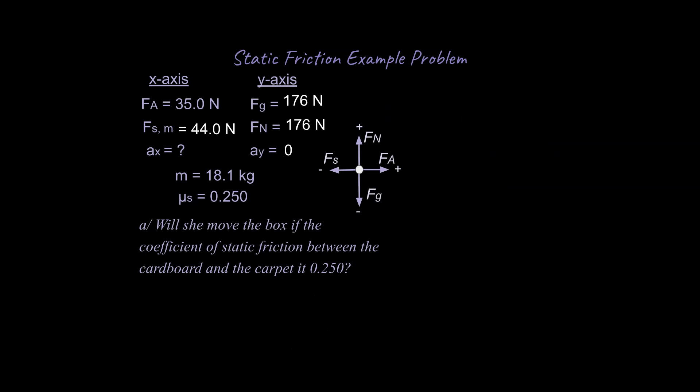So it says, will she move the box if the coefficient of static friction between the cardboard and the carpet is 0.250? So will she move this box? What do you think? Look at what we know and come up with an answer right now, please. And the answer is no. Why is the answer no? Well, her force applied is 35 and the maximum static friction that can work in the opposite direction of motion is 44.